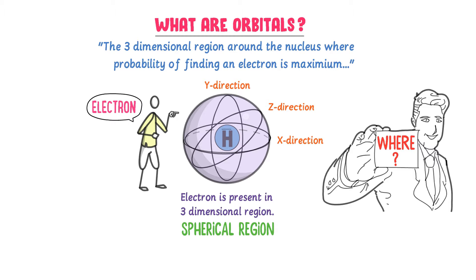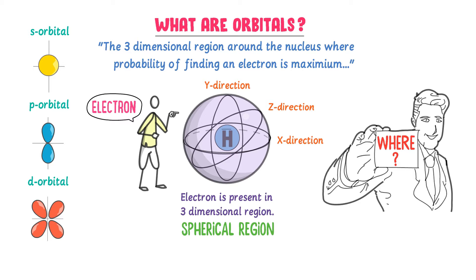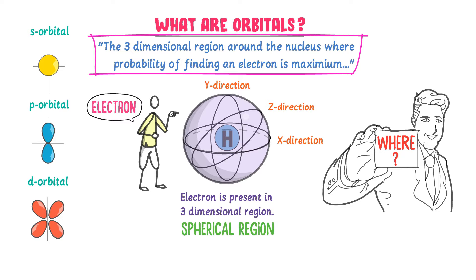For example, the shape of the S orbital is spherical, the shape of the P orbital is dumbbell, and the shape of the D orbital is double dumbbell. Thus, note that atomic orbitals are the three-dimensional regions where we can locate the electrons of any atom.